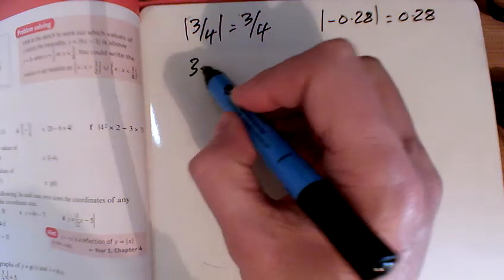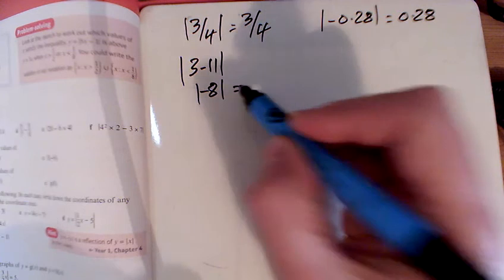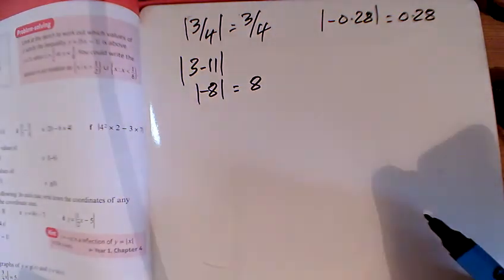For number 3, for part C we've got to do some maths first of all, 3 take away 11 of course is minus 8. And how far is that from 0? Well it's 8.